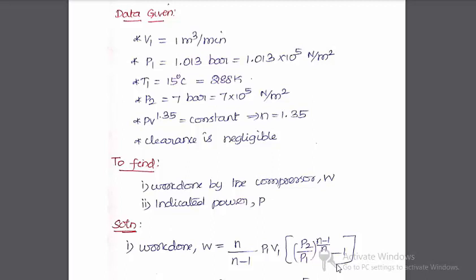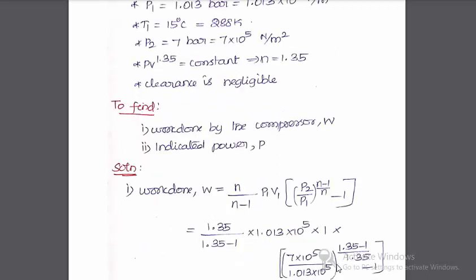Direct formula substitution: work done by the compressor for polytropic process is N/(N-1) times P1V1 times [(P2/P1)^((N-1)/N) - 1]. All values are known.